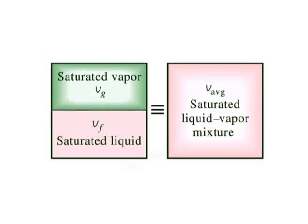A saturated mixture can be treated as a combination of two subsystems: the saturated liquid and the saturated vapor. However, the amount of mass for each phase is usually not known. Therefore, it is often more convenient to imagine that the two phases are mixed well, forming a homogeneous mixture. Then the properties of this mixture will simply be the average properties of the saturated liquid vapor mixture under consideration.